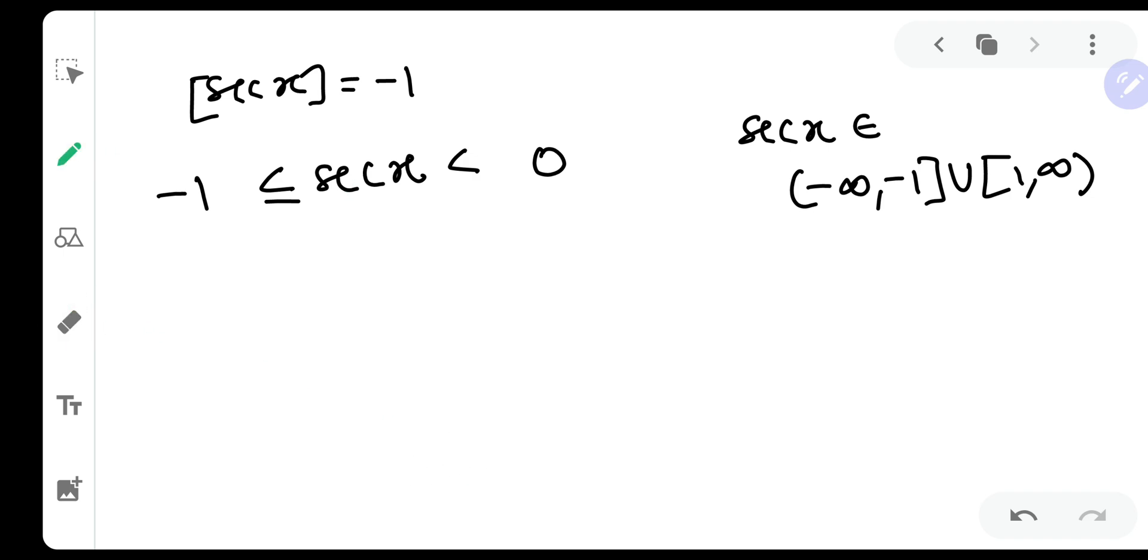It will always be above minus one. Now let us move ahead. Sec x equal to zero for GIF bracket, so sec x can be equal to zero but it will be always lesser than one.